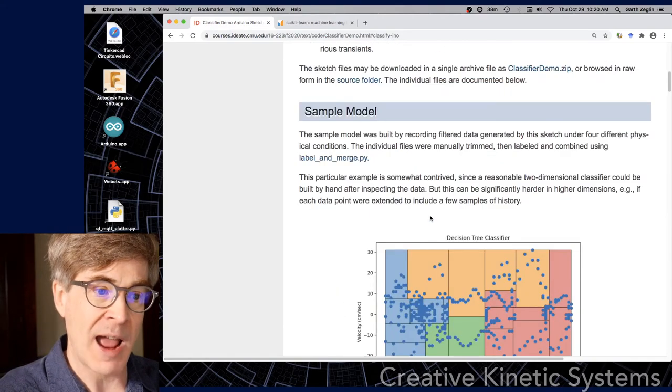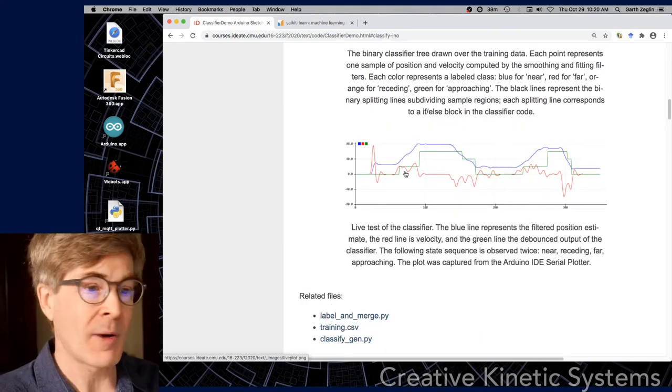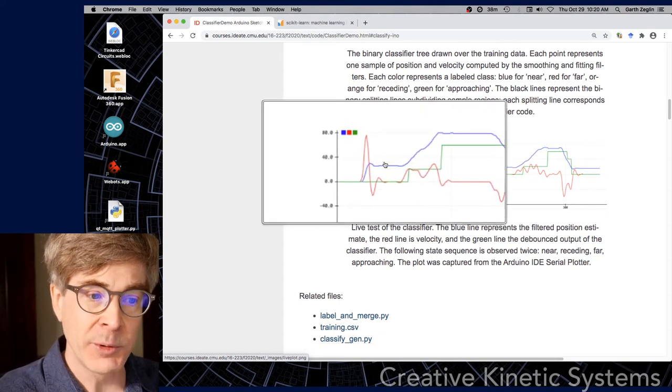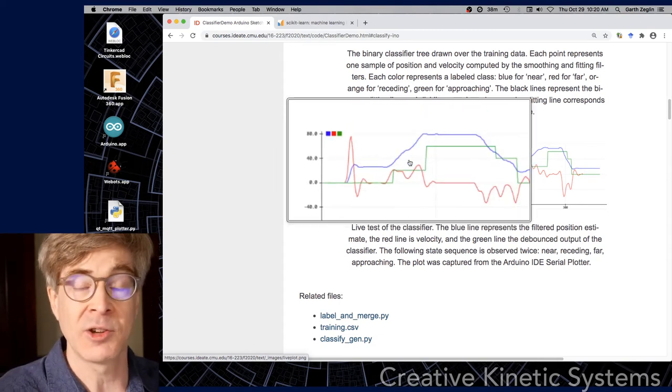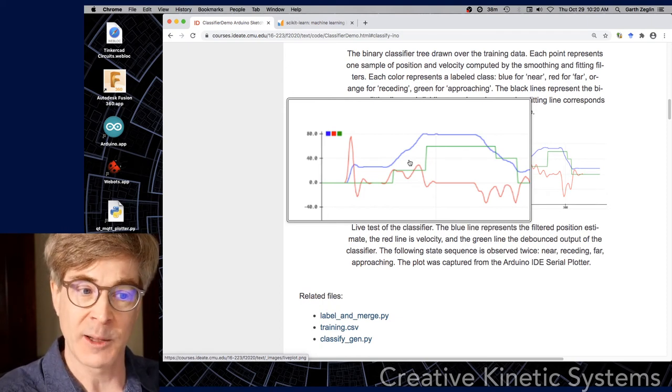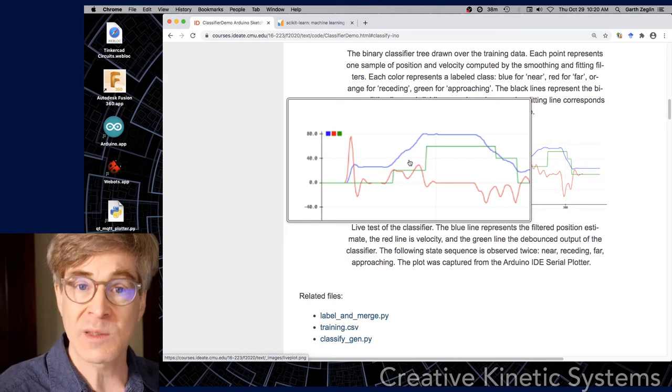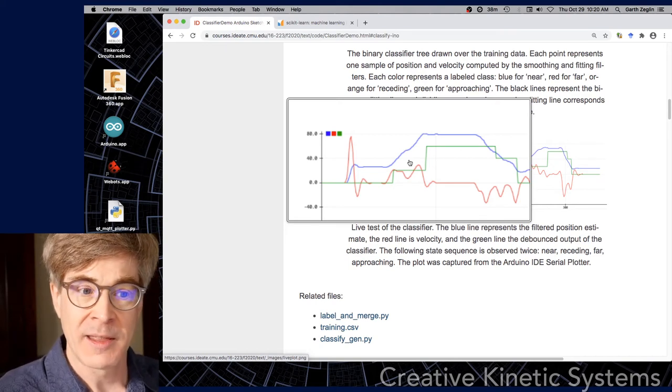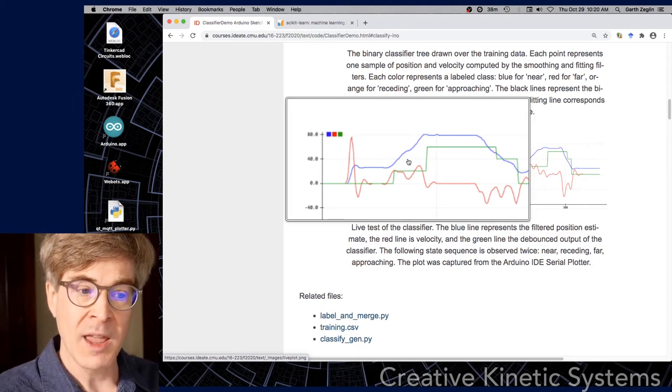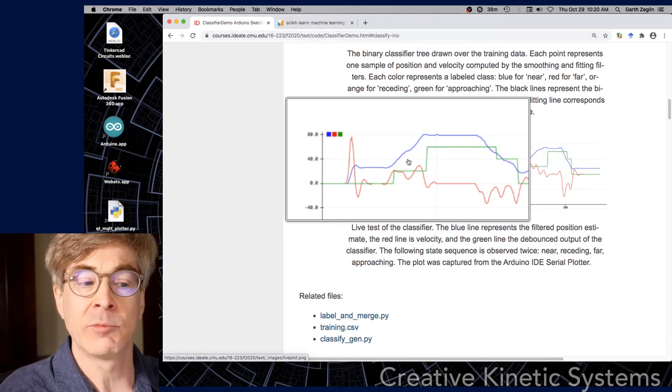So when you run this whole system, you end up with a graph that looks like this. This is a plot that's taken from the serial plotter in the IDE, and the blue line we see here is the filtered position signal. This is already after we've removed zeros, low-pass filtered, and fitted the quadratic. What we get is a reasonably smooth approximation of what the world was doing. As my hand moved in front of the sensor, how it was moving.